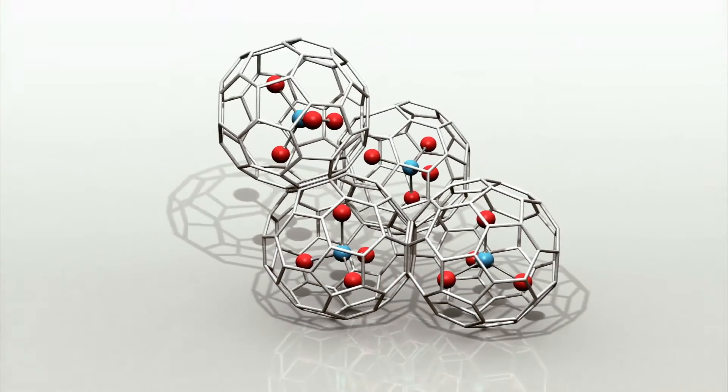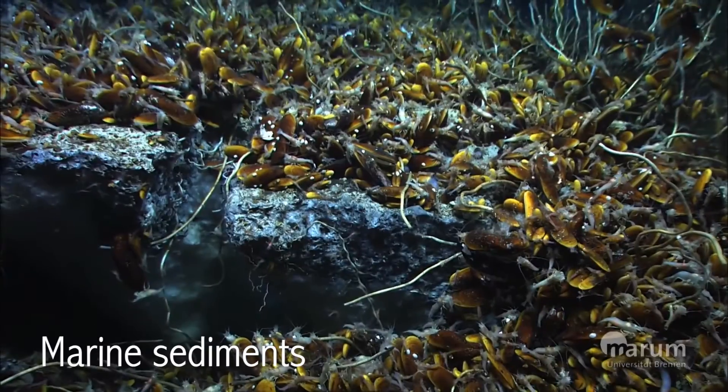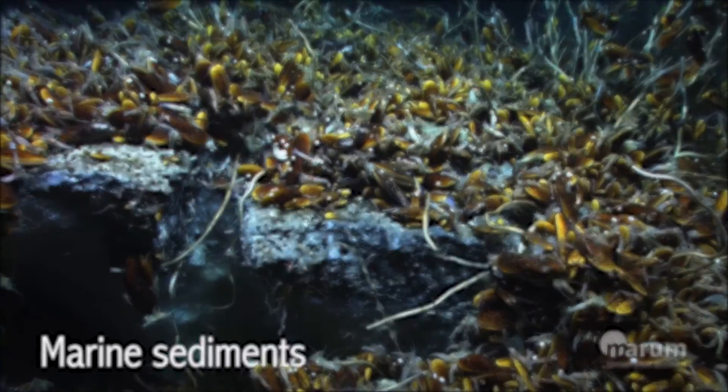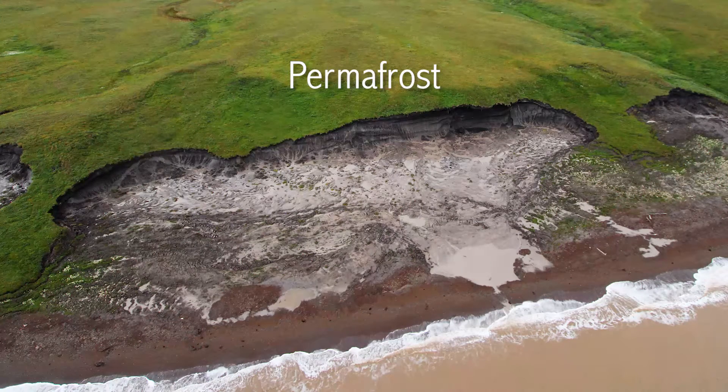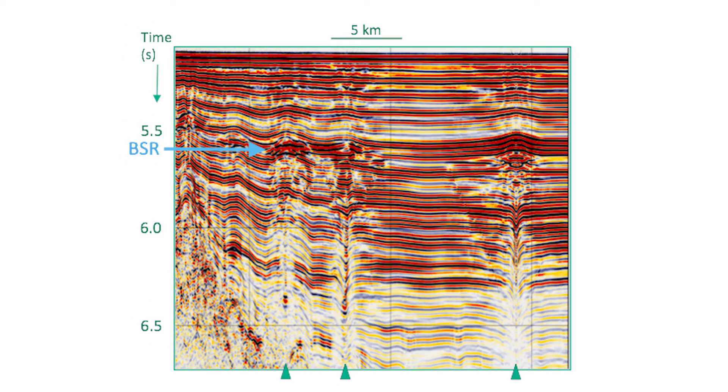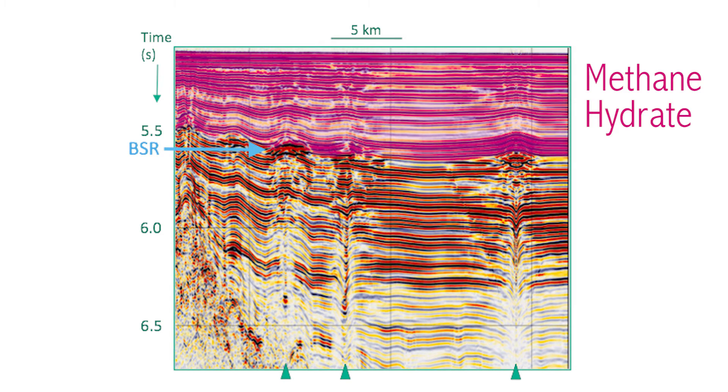So let's review. Methane hydrates are frozen ice cages that enclose methane gas. They form in marine sediments and permafrost areas, and in marine settings, bottom simulating reflectors can tell us where the methane hydrate may be.